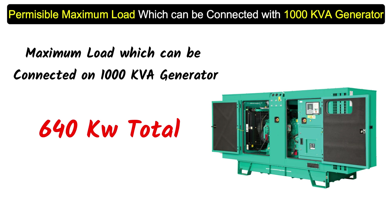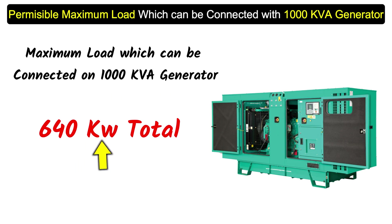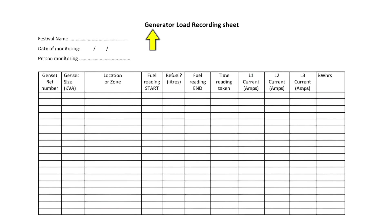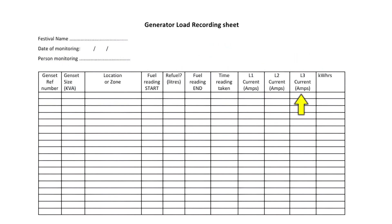If asked in an interview how much load you can connect to the generator, you should give the 80% load value. If you have ever worked on a generator, you must have noticed the logbook where we write the entire data — we write the ampere rating, the kilowatt rating, and mostly we monitor the ampere load running on the generator.